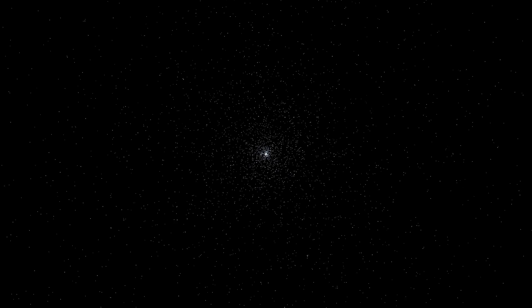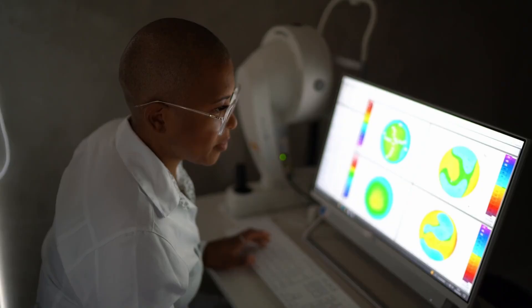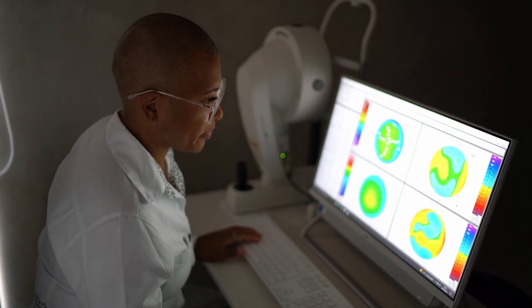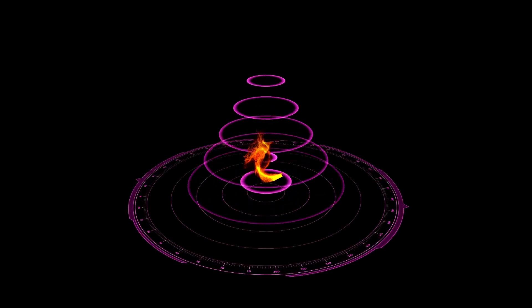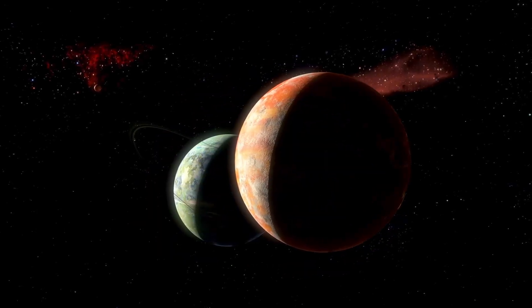The observable universe is the portion of the cosmos we can examine through telescopes and other scientific instruments. However, our observations are limited by the speed of light, the ultimate cosmic speed limit. Because light takes time to travel, we can only see objects whose light has had enough time to reach us.